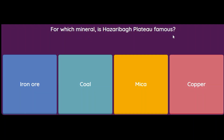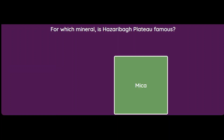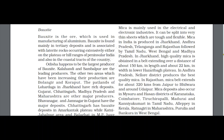For which mineral is the Hazaribagh plateau famous — iron ore, coal, mica, or copper? The answer is mica. From the book: high-quality mica is obtained in a belt extending about 150 kilometres in length and about 22 kilometres in width in the lower Hazaribagh plateau, which is why it is famous for mica.